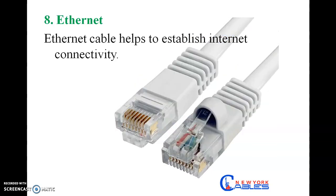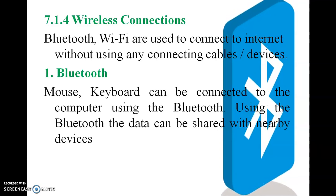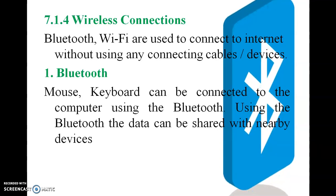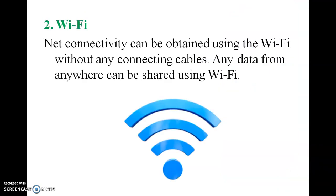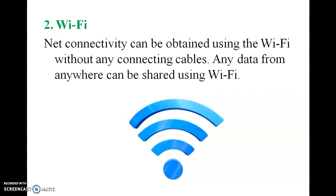Wireless connections. Bluetooth and Wi-Fi are used to connect to the internet without using any connection cables. Bluetooth can be used to connect mouse and keyboard. Wi-Fi: network connectivity can be obtained using Wi-Fi without any connecting cables. Data from anywhere can be shared using Wi-Fi.